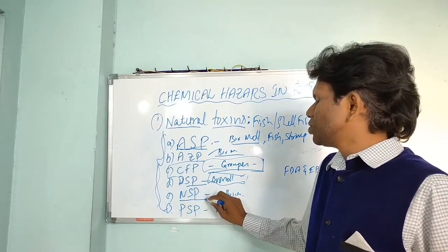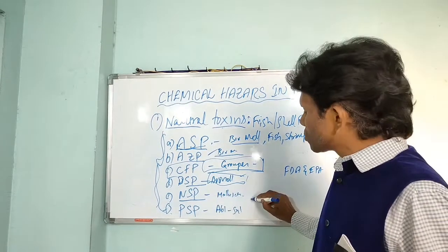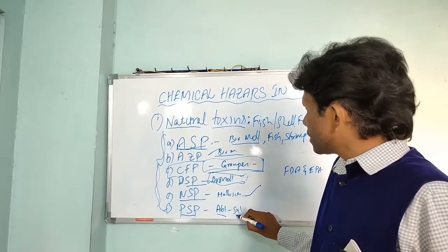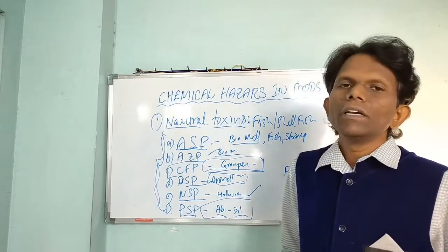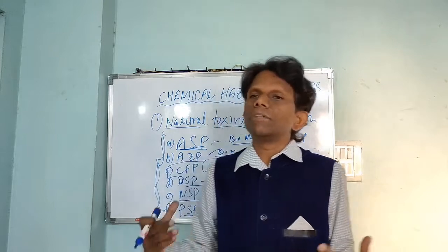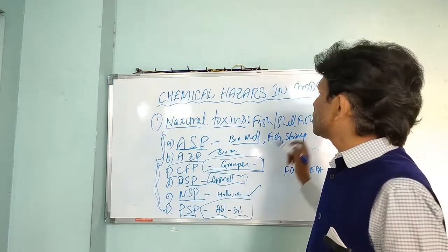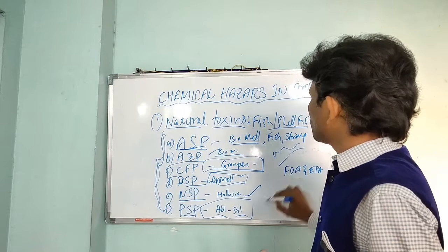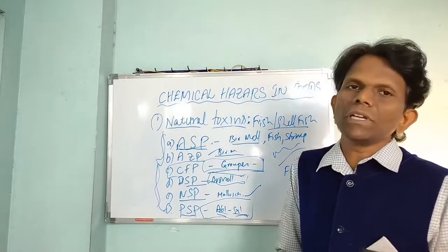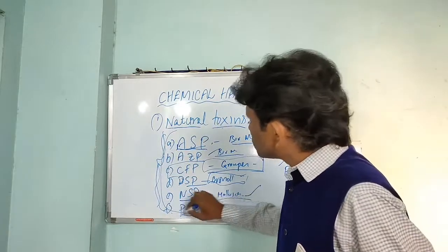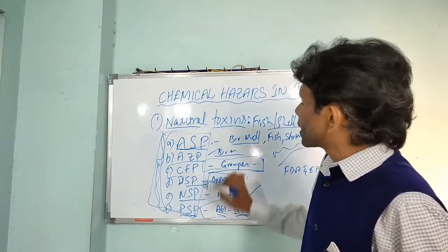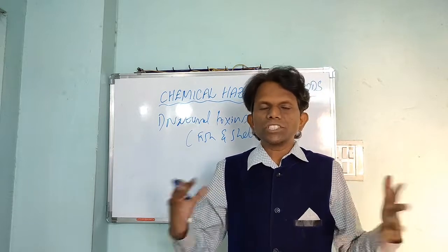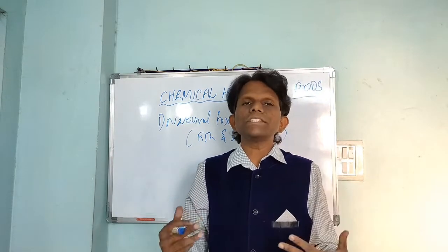The fifth one is Neurotoxic Shellfish Poisoning (NSP), which also occurs in certain kinds of molluscs. The last one is Paralytic Shellfish Poisoning (PSP) — some abalone and snails are also subject to this poisoning. In countries like India, people generally do not eat molluscan shellfish, but in developed countries people eat molluscan shellfish, abalone, snails, and mussels. These kinds of toxin outbreaks occur more commonly in developed countries.